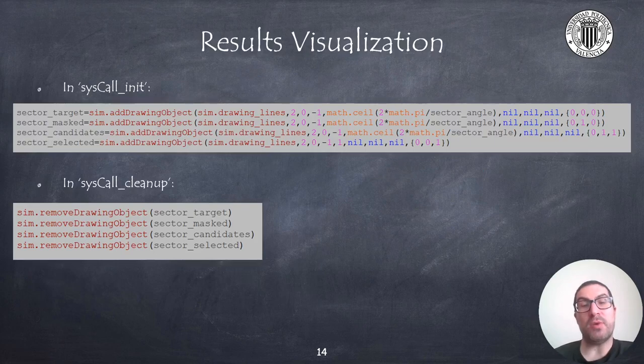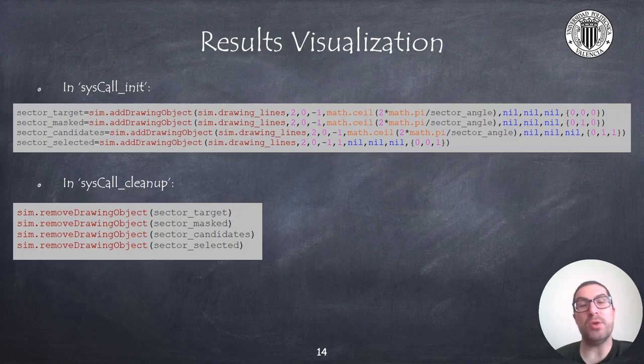So, in most cases, it is interesting to visualize some of the results of the algorithm. And here, I just simply show you a code that I use to draw some lines to represent free sectors, also the selected direction and the target direction, as well as some candidate directions. This visual information can significantly help you to understand what is happening in particular situations.